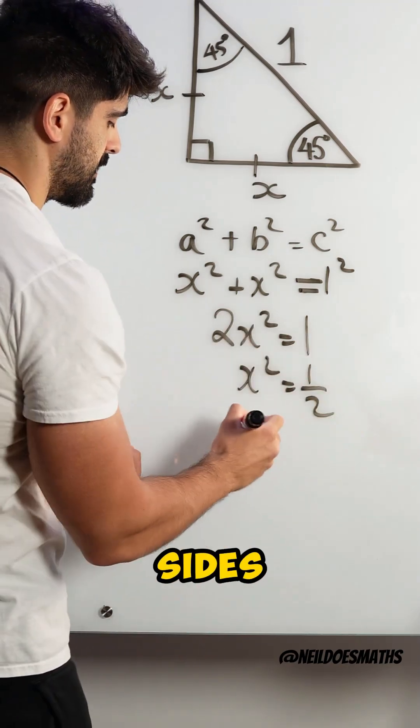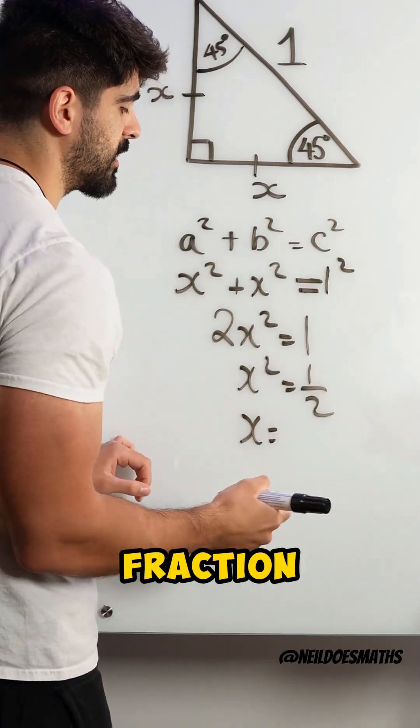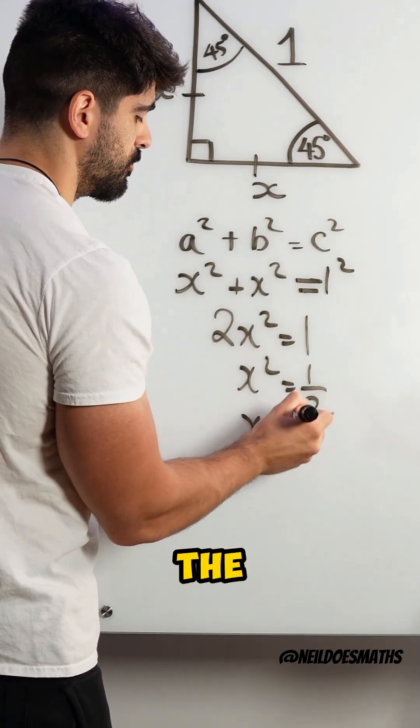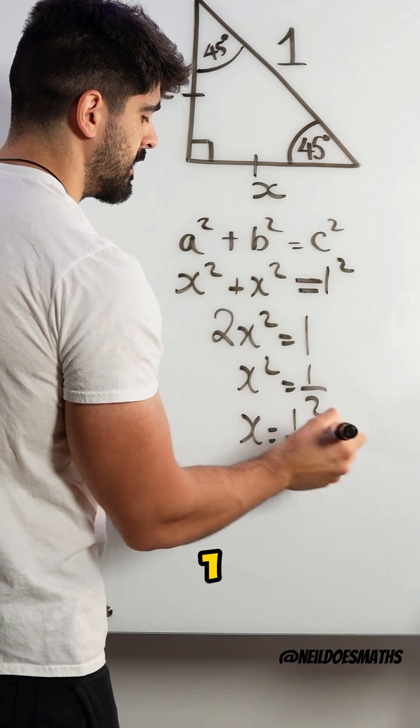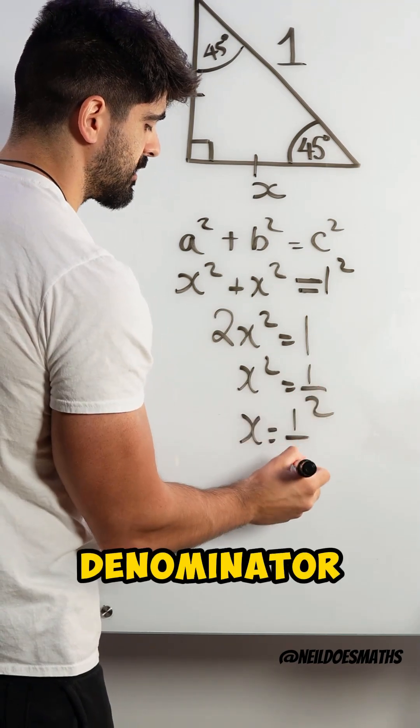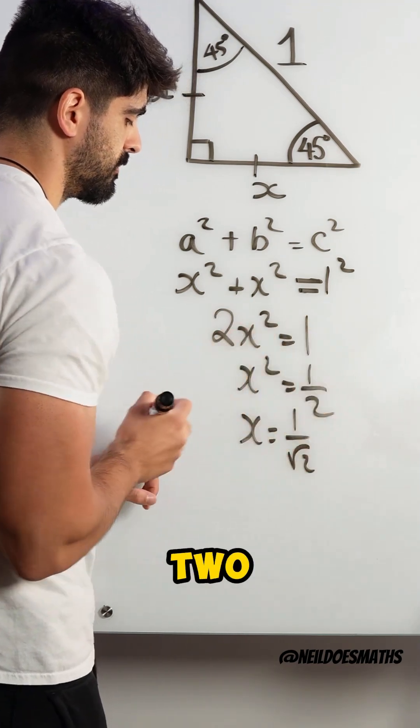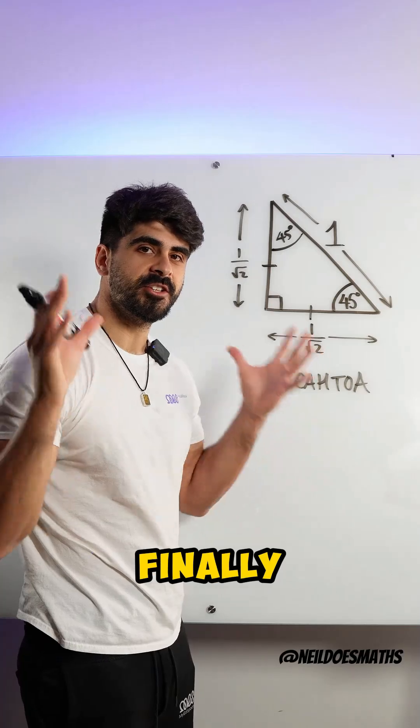And then we root both sides. When you root a fraction, you root the numerator — 1 — and you root the denominator — root 2. So x equals 1 over root 2.